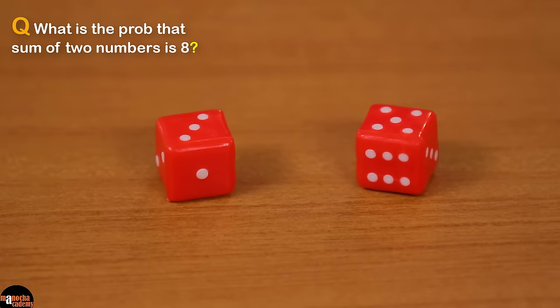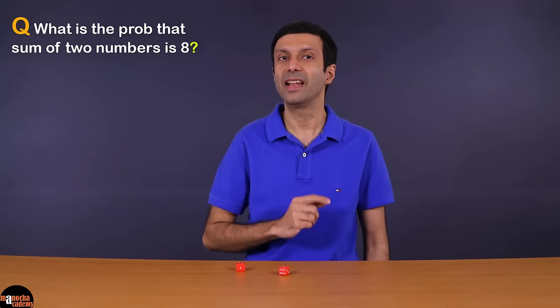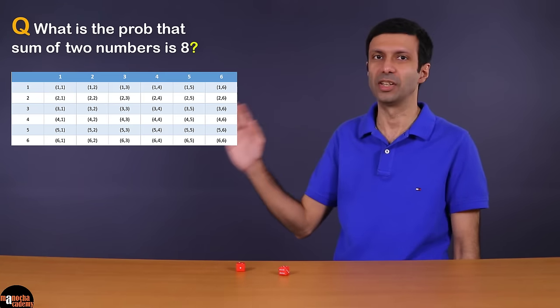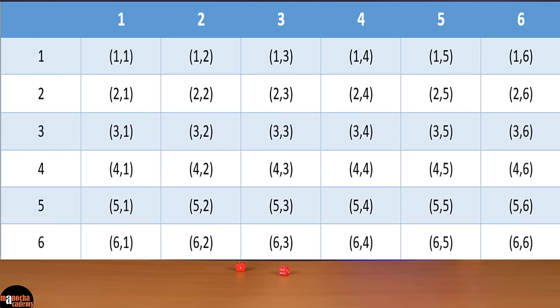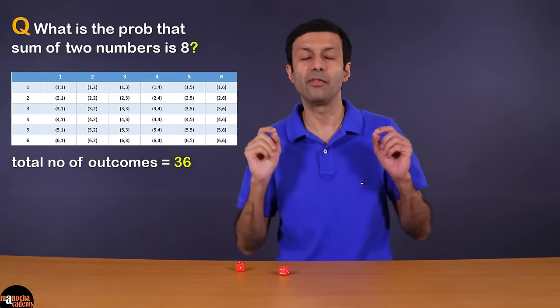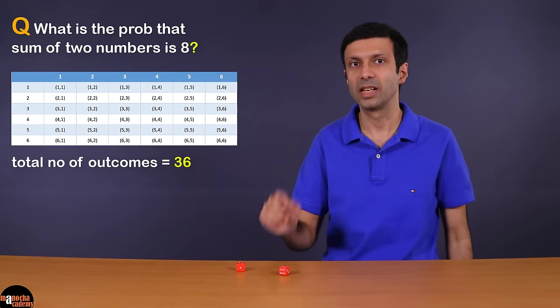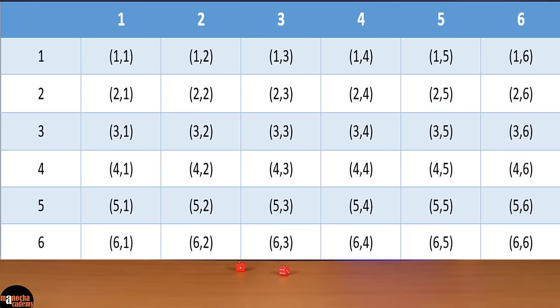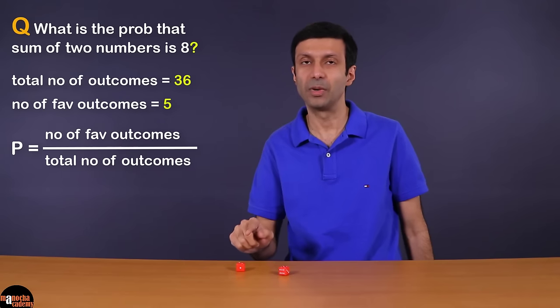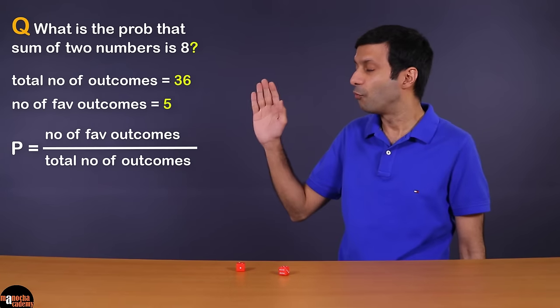If two dice are rolled at the same time, what is the probability that the sum of the two numbers is eight? Let's list all the possibilities in a table. Each dice gives numbers from one to six, so the total number of outcomes is 6 × 6 = 36. From the table, the number of favorable outcomes where the sum equals eight is five. So the probability that the sum of the two numbers is eight is 5 by 36.